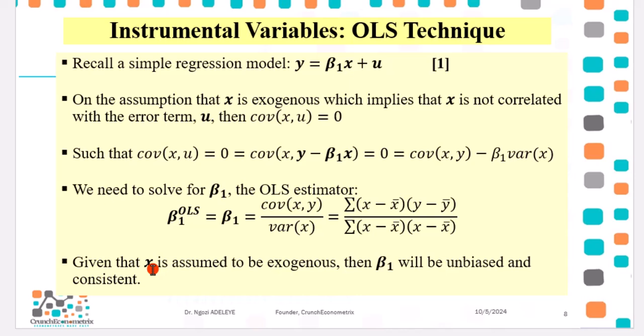Now, given that X is assumed to be exogenous, then beta one will yield unbiased and consistent estimates.